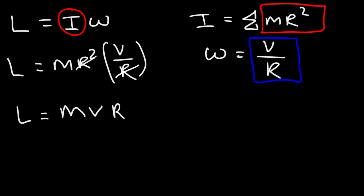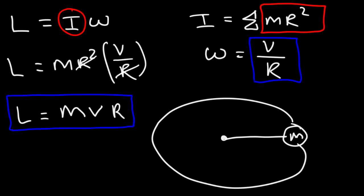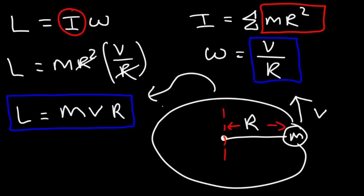So L equals mvr is another formula to calculate the angular momentum of an object. For example, if this is the center of a circle and you have a rope with a ball of mass m revolving around that point, and it's moving with some velocity, then r is the radius of the circle — the distance between the axis of rotation and the object itself.